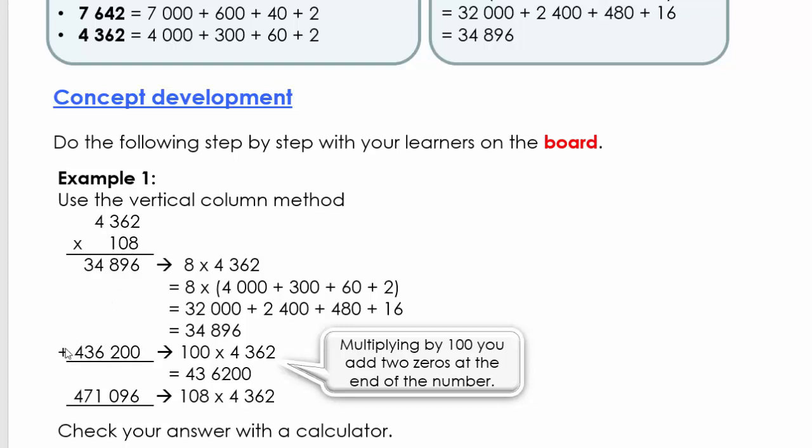So 8 times that number and 100 times that number gives you this answer and that answer, and the only thing we need now to do is to add it. Use this opportunity to check your answer with the calculator. It's time now to pause and I want you to try this example.